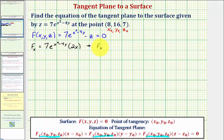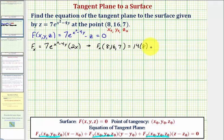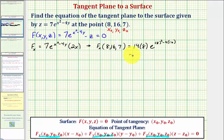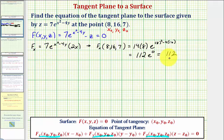Now we evaluate this at the point of tangency. We have 14x, so 14 times x = 8, times e raised to the power of x² which is 8², minus 4 times y where y is 16. So 14 times 8 equals 112, times e^(64 - 64) = e^0 = 1. So the partial with respect to x evaluated at the point of tangency is 112.